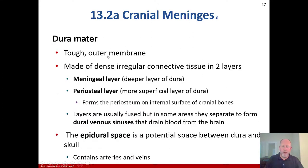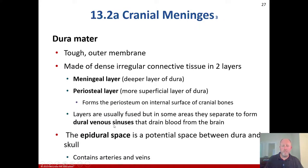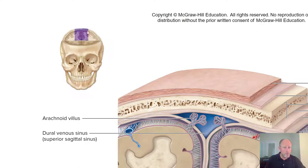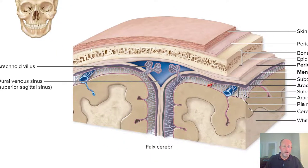The dura mater is a tough outer membrane made of dense irregular connective tissue in two layers: the meningeal layer (deeper) and the periosteal layer (more superficial). It forms a periosteum on the internal surface of the cranial bones. The layers are usually fused but in some areas separate to form dural venous sinuses that drain blood from the brain. The epidural space is a potential space between the dura and the skull that contains arteries and veins.